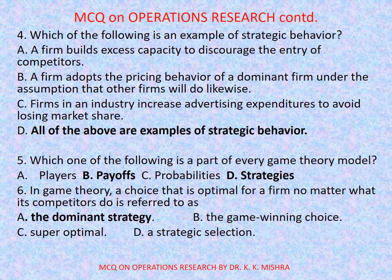Question number 4: Which of the following is an example of strategic behavior? Options are: a) a firm builds excess capacity to discourage the entry of competitors, b) a firm adopts the pricing behavior of a dominant firm under the assumption that other firms will do likewise, c) firms in an industry increase advertising expenditures to avoid losing market share, d) all of the above. Correct option is d) all of the above are examples of strategic behavior.